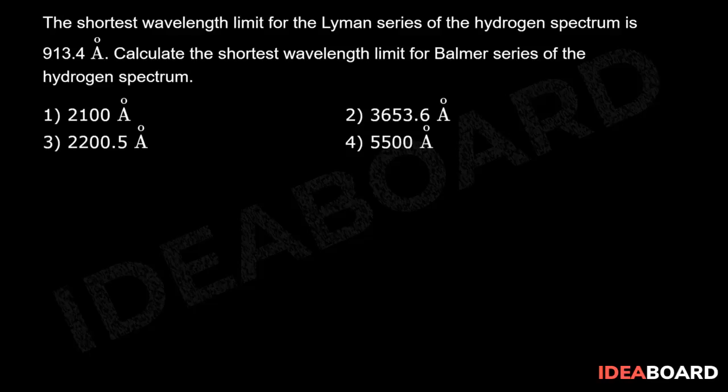The shortest wavelength limit for the Lyman series of the hydrogen spectrum is 913.4 angstrom. Calculate the shortest wavelength limit for Balmer series of the hydrogen spectrum. Now in this question, the given information doesn't make any sense because either way we have to calculate.